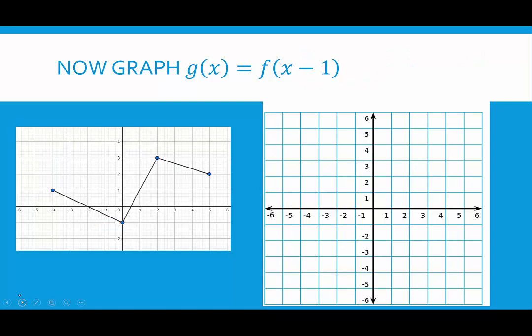In our last example, we still have the same f of x over here. And this time it says that g of x is given by f of x minus 1. So that minus 1, now x has to work that much harder to get back to where it started. So this indicates that this is going to be a shift to the right, 1 unit.